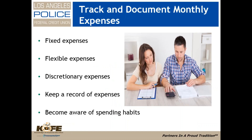Now we're going to talk about tracking and documenting, because creating a budget depends heavily on how you track and document your money — be it your fixed, flexible, or discretionary expenses. Keeping a record of these items is probably the best way to find out exactly where your money is going, and you start to become aware of your spending habits. For example, I wouldn't have known how much I spend on coffee until I started budgeting and wondered why I didn't have enough money to take a trip. By saving from buying my coffee — which I buy twice a day — I could easily save $300 a month.